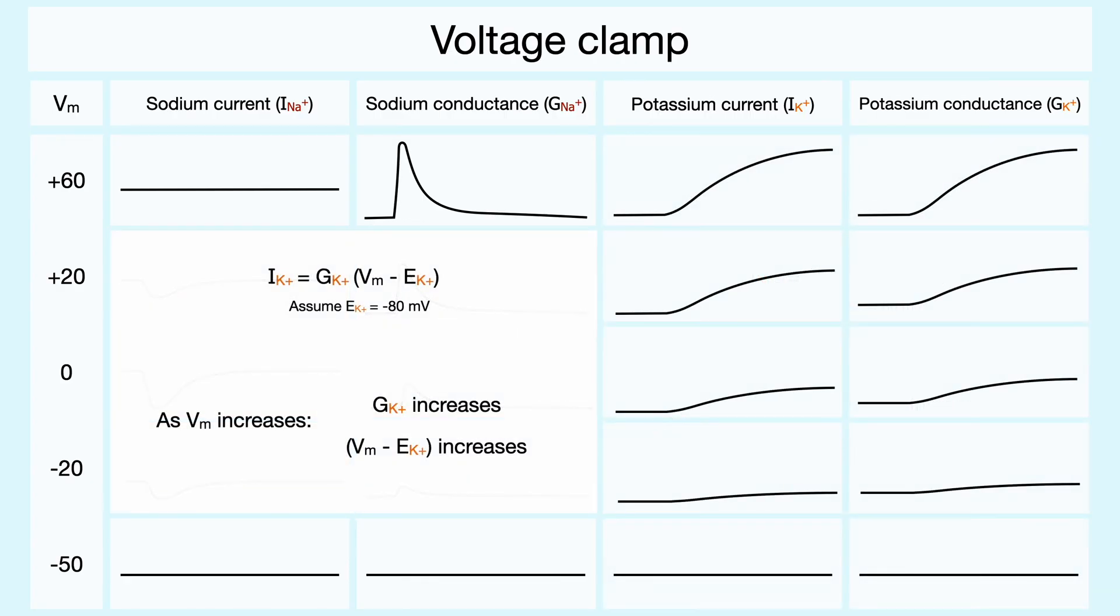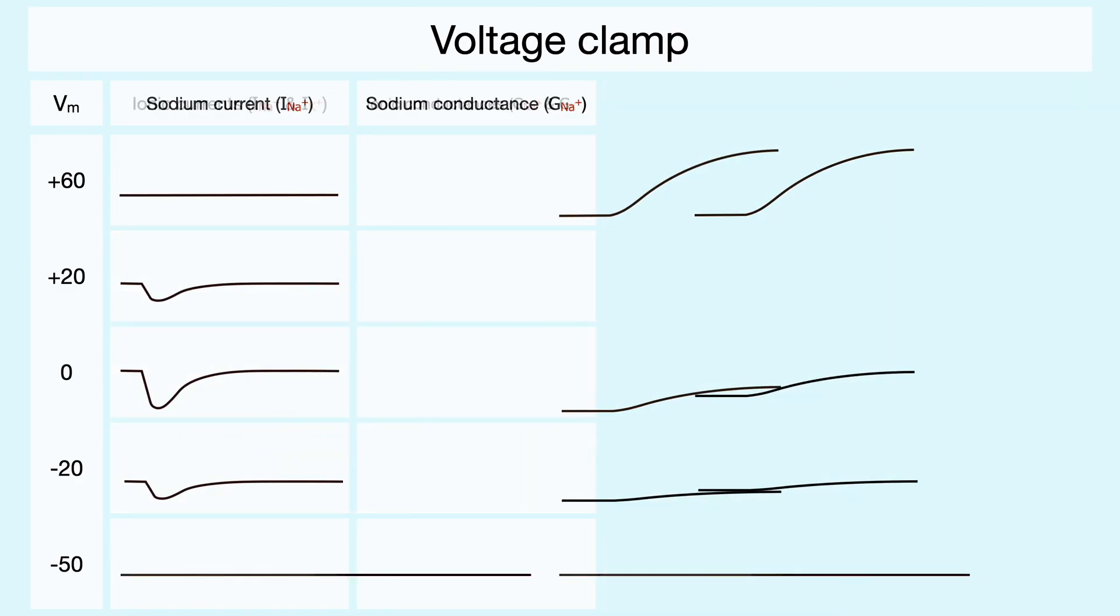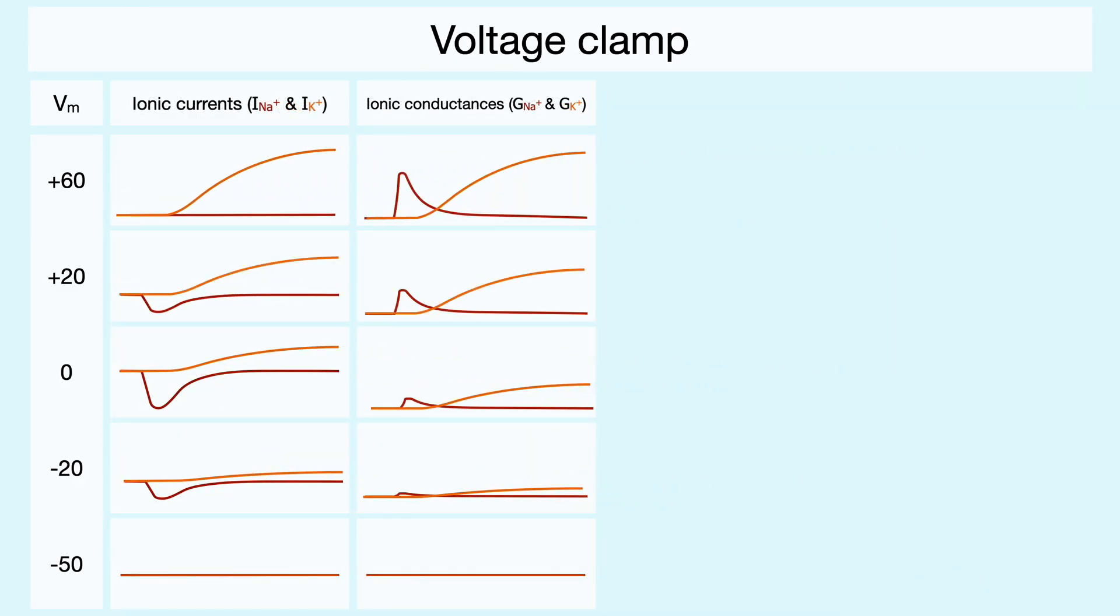On the other hand, when we consider potassium, because its equilibrium potential is very negative, the current and the conductance keep increasing as the membrane potential increases. To better appreciate these results, we can overlap the potassium curves with the sodium ones.